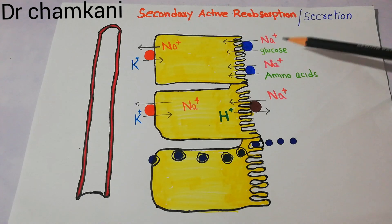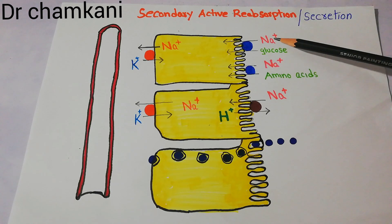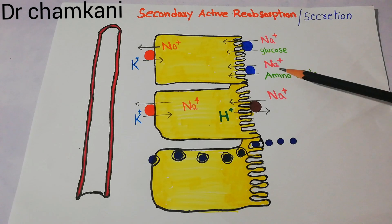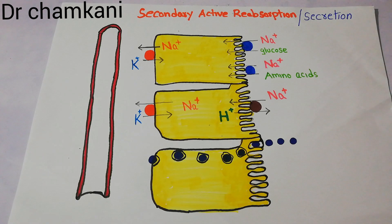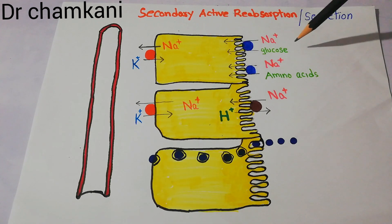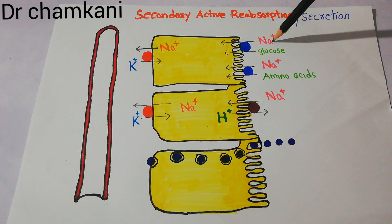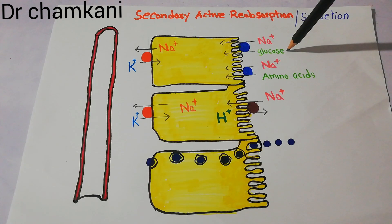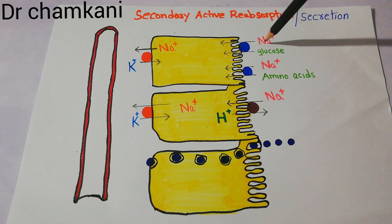In secondary active reabsorption, glucose and amino acids also need energy to move uphill into the cells, since their concentration is higher in the lumen. This energy is provided by sodium — acting as their girlfriend — because sodium is moving inward with energy. Glucose and amino acids share the ride on the co-transport carrier proteins along with sodium to gain entry into the cells.